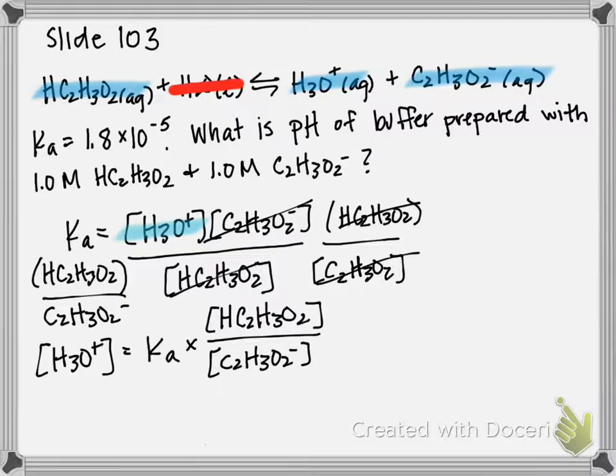And then, I'm going to plug in my values. So, we're given Ka up here, and then we're given acetic acid concentration, and then we're also given acetate ion concentration.